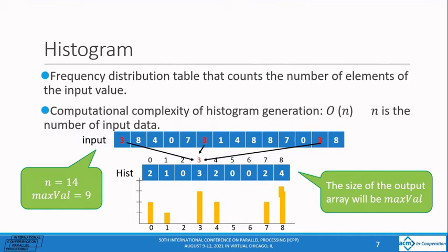Histogram is an algorithm to generate a frequency distribution table that counts the number of elements in the input array. The size of the output array is max val. This is because it's based on the index that matches each element of the input array. For example, the number of data n in the input array is 14, and max val is 9.